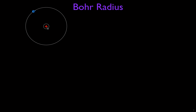Here we have our hydrogen atom: a positive nucleus and a negative electron. The electron is going around that nucleus, and at this point its velocity is pointing in that direction. We want to find the Bohr radius — the distance from the proton out to the first ground state, N1. We're going to find that distance R by knowing that the electric force on the positive and negative charges is equal in magnitude but opposite in direction to the centripetal force.